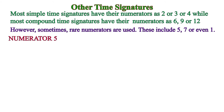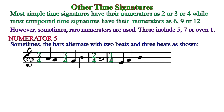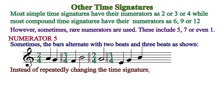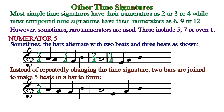Now let's talk about numerator five. Sometimes bars alternate between two beats in a bar and three beats — for instance, 2/4 then 3/4, then 2/4, then 3/4. Instead of changing the time signature all the time, the two bars are joined. So rather than 2/4 then 3/4, you now make the time signature 5/4. Five-four means there are five beats in the bar. Other time signatures done that way include 5/2, 5/8, and 5/16.